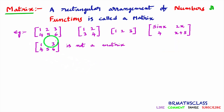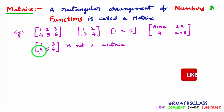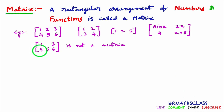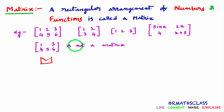Observe this — is it a matrix? This is NOT a matrix. If you observe the shape of this arrangement, it is coming like this — the shape is not a rectangle. So when you see this type of arrangement, can we say it is a matrix? No, it is not a matrix.